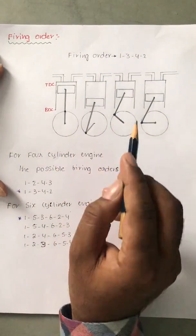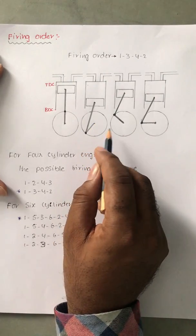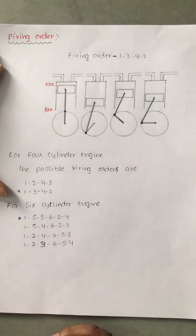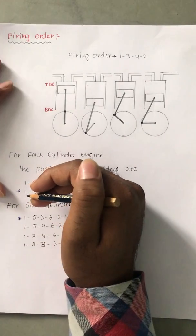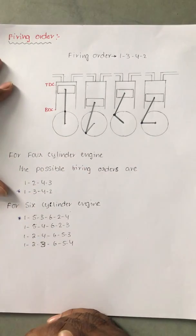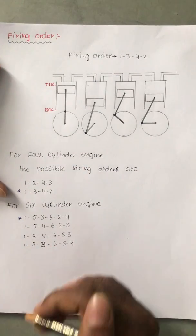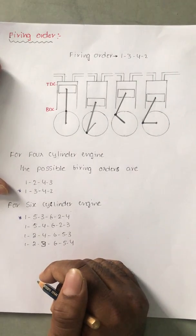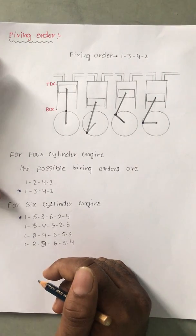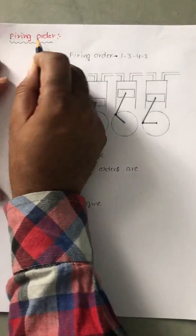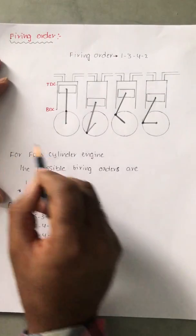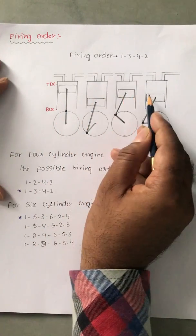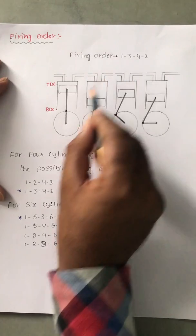The most important point is that you will get very high vibrations, because all pistons do compression at the same time and expand at the same time, making the oscillation very high. To eliminate these problems, we use firing order. For a four-cylinder engine, the cylinders are numbered one, two, three, four, and the firing order is one, three, four, two.